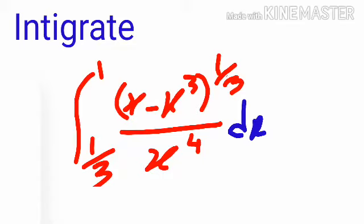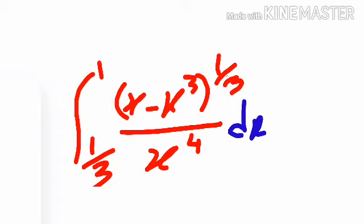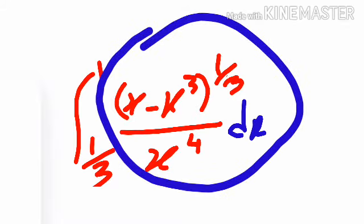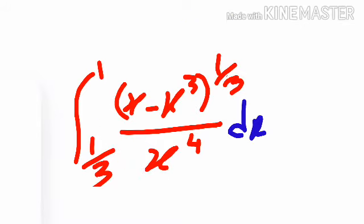There is a very interesting integration question. The question is given: the integral of (x minus x-cube) to the power 1/3, divided by x to the power 4, with lower limit 1/3 and upper limit 1. To integrate this function, we need to simplify the portion (x minus x-cube)^(1/3) divided by x^4. You may assume x equals sine theta or cosine theta trigonometrically, but I shall solve it algebraically.